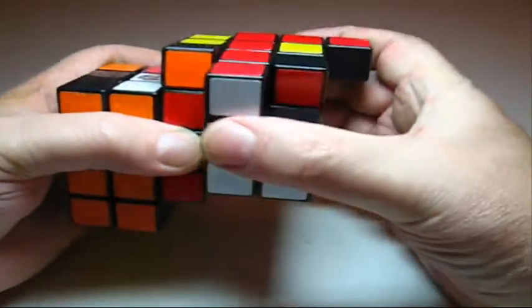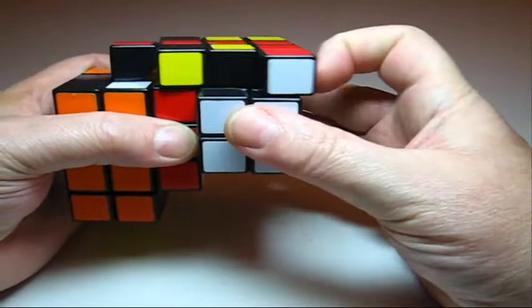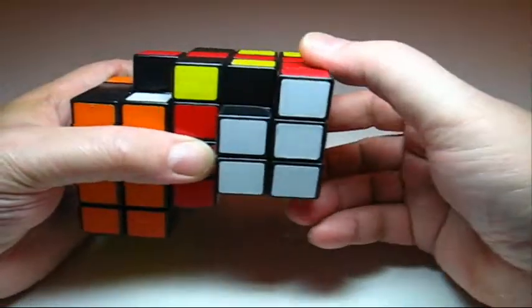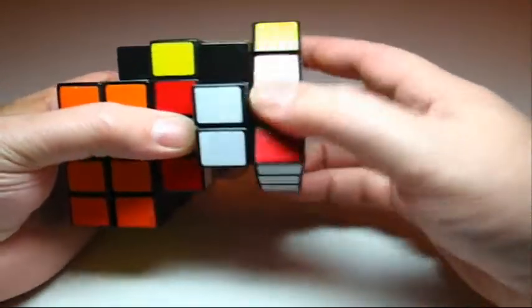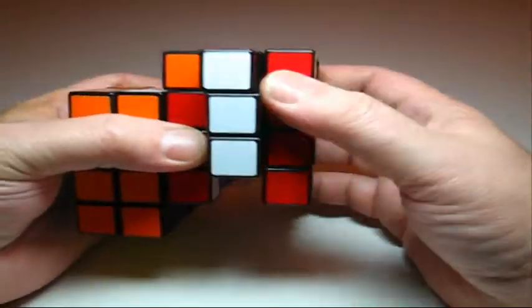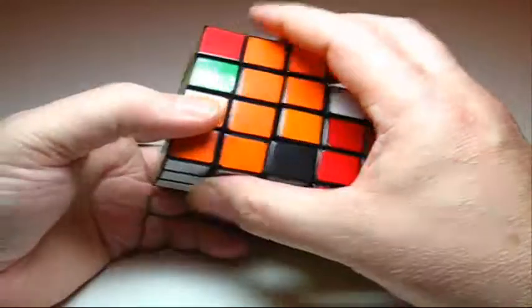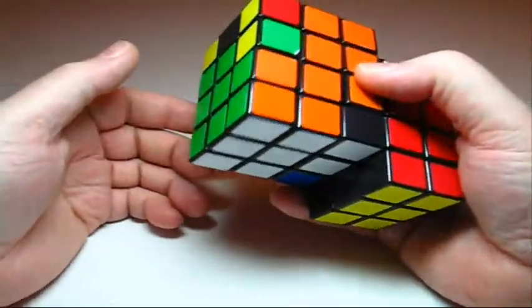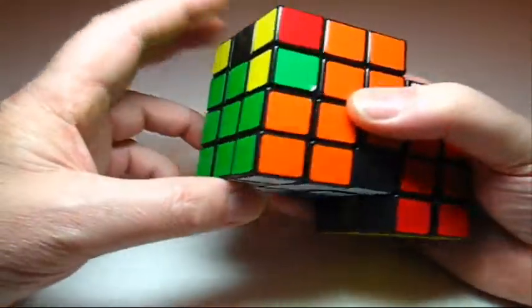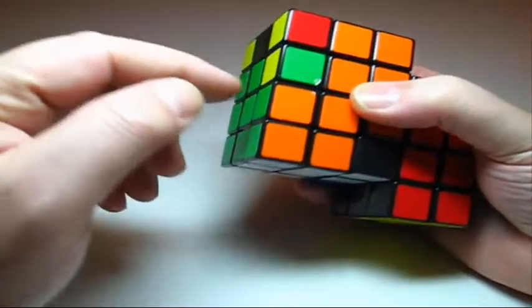So we do like we did before. We put up both sides, bring only the corners down, and then bring back the middle, the edge. Then we go to the other side.